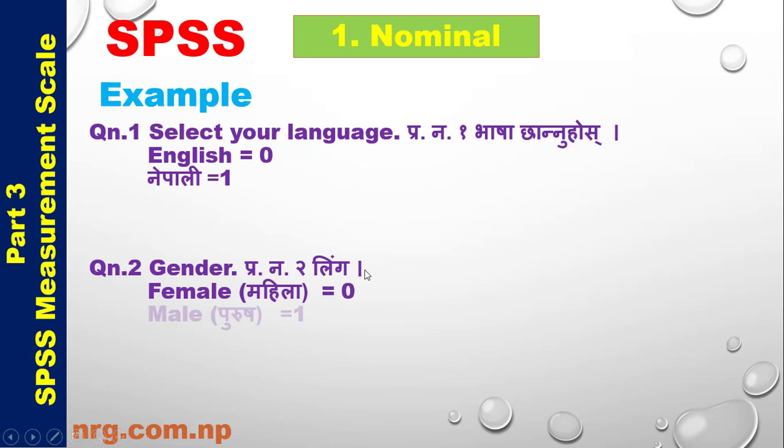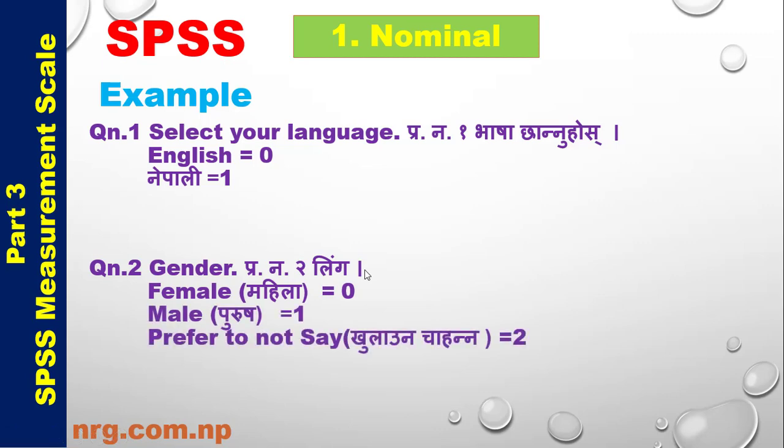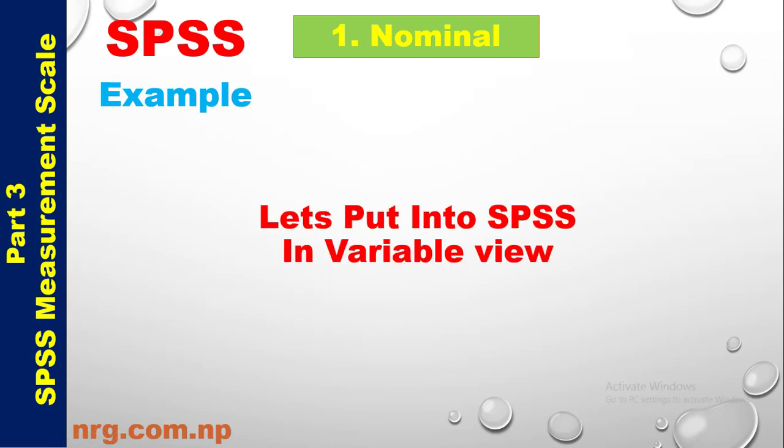Question Number 2: Gender — Female: 0, Male: 1, Prefer not to say: 2. Let's put these into SPSS in Variable View.